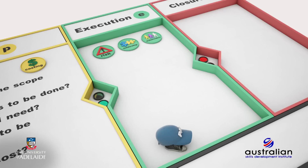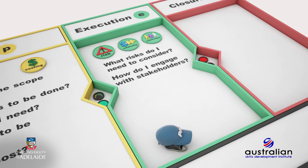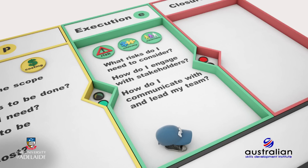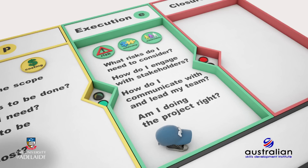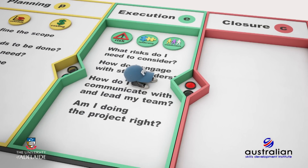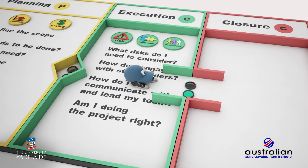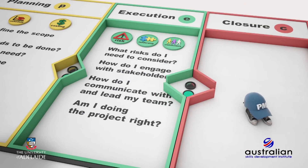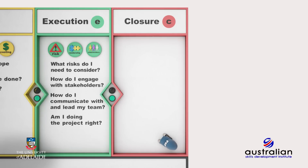Important questions for this stage are: what risks do I need to consider when managing a project? How do I engage and manage stakeholders? As a leader, how do I motivate, communicate and lead my team? And finally, am I doing the project right? Once you feel you have sufficient clarity around these questions, you should receive the green light to move through to the last part of the lifecycle.